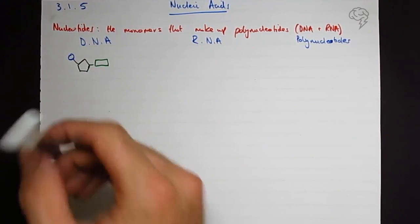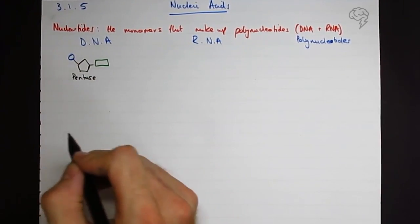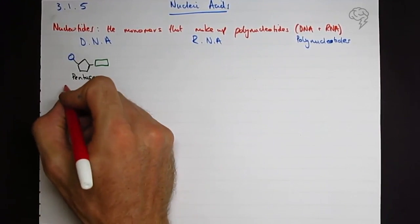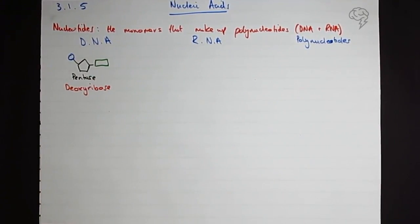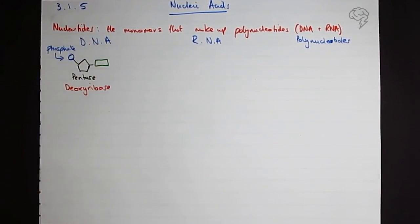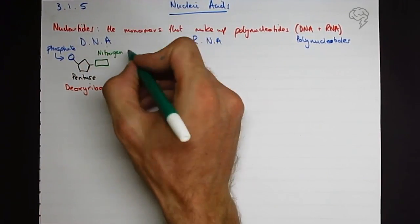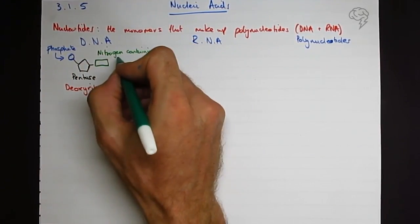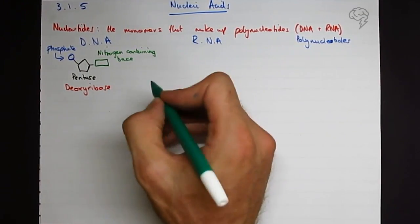So let's label these. This is a pentose sugar, and the sugar in DNA is deoxyribose. This is a phosphate group, and this is a nitrogen-containing base.